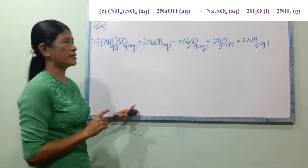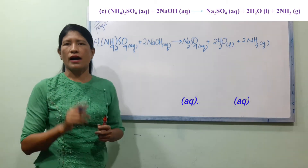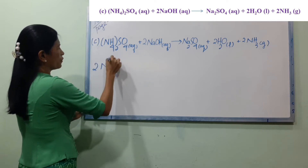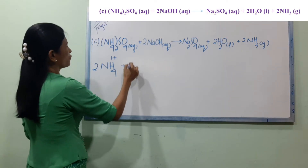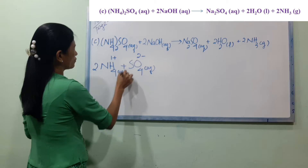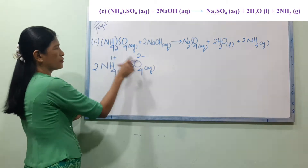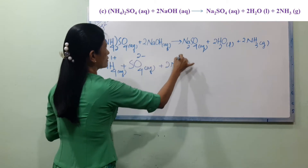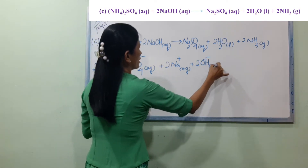Now we complete the ionic equation here. NH4 ammonium — NH4 1 plus. SO4 2-minus aqueous. Now NH4 plus, SO4 2-minus aqueous, plus NaOH giving 2 Na-plus aqueous plus 2 OH-minus aqueous.